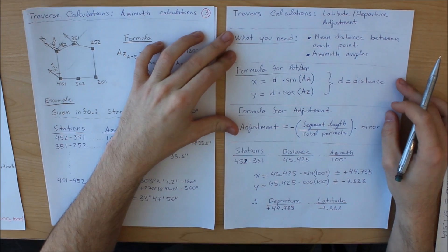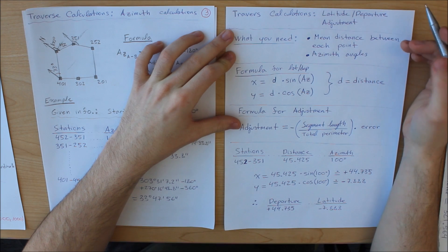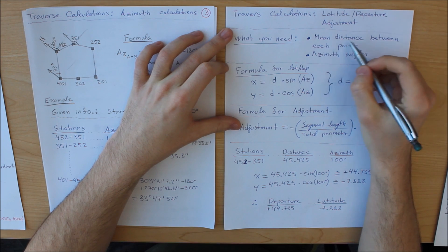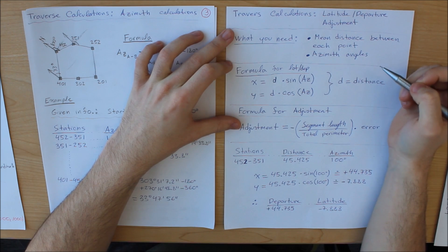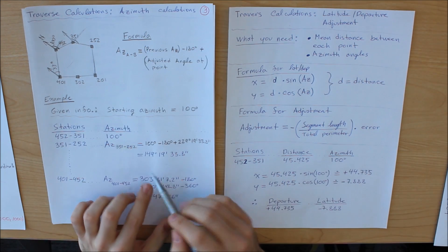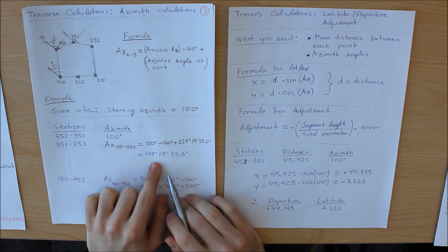Alright guys, so I'm going to show you how to calculate the latitude and departure adjustments. So here's what you will need first. You will need your mean distance between each point. You will also need your azimuth angles, so that is the angles that we've calculated in our previous video.